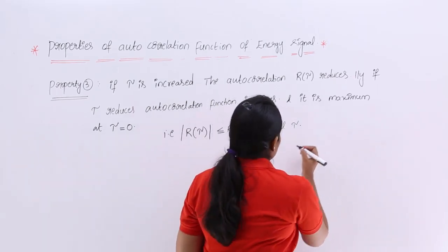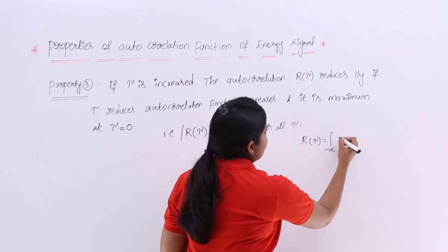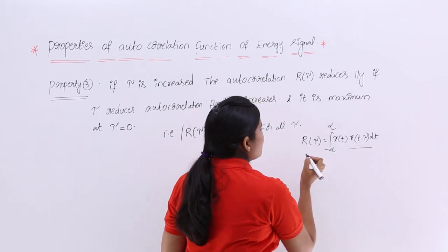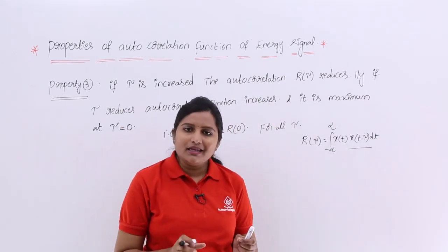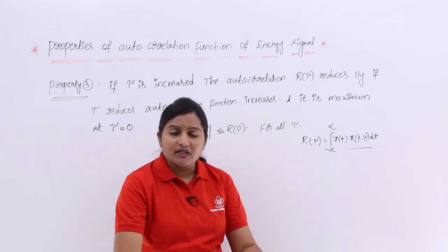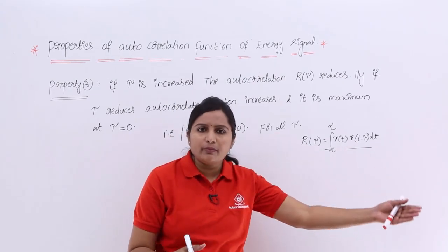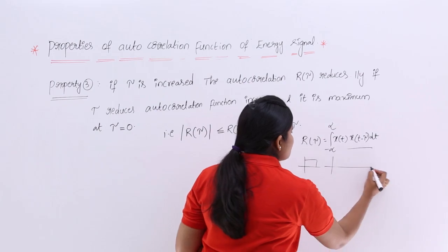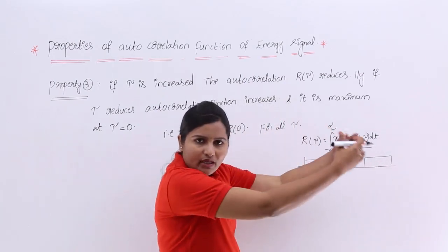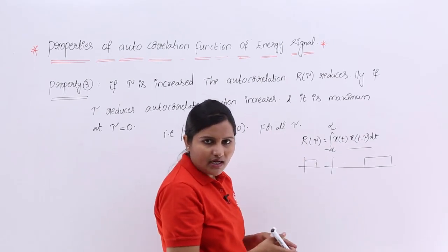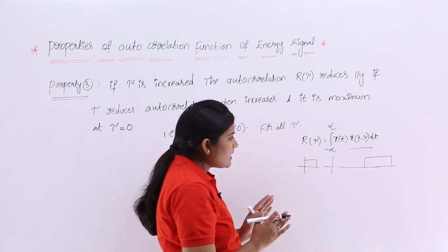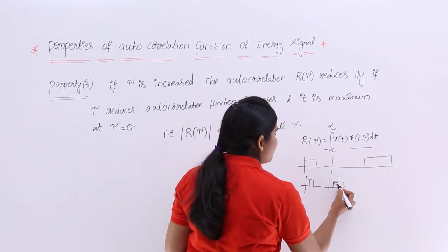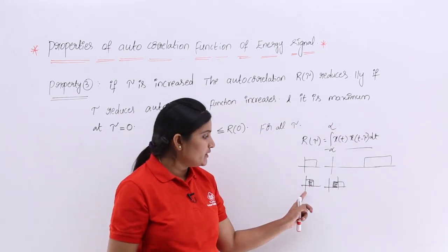The autocorrelation function R(tau) is defined as the integral from minus infinity to infinity of x(t) multiplied by x(t + tau) dt. This is a measure of similarity between a signal and a shifted version of the same signal. If tau is increasing, that means we are shifting the signal by many positions, and the measure of similarity may decrease.